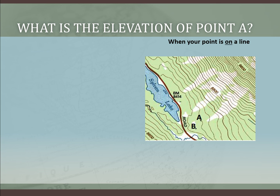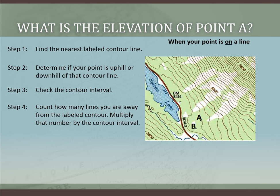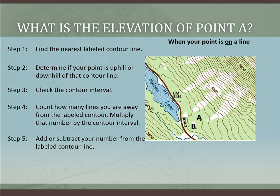Now, in this case, we're trying to determine the elevation of two different points. When your point is on a line, there's a series of steps you can follow. First, you find the nearest labeled contour line. Then you determine if your point is uphill or downhill of that line. You check the contour interval. You count how many lines you are away from the labeled contour, and multiply that number by the contour interval. And finally, you add or subtract that number from the labeled contour line.